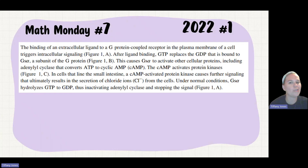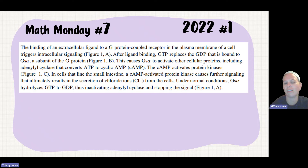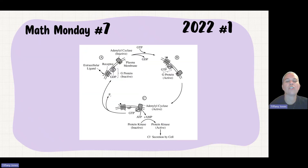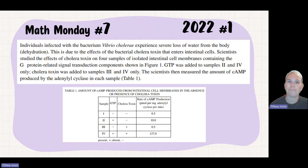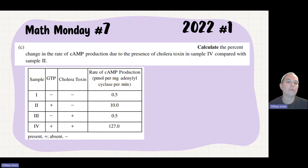So it's question number one — a long reading prompt talking about the binding of an extracellular ligand to the G-protein coupled receptor, and how that signal transduction leads to chloride ions being secreted, which leads to water loss. They give you a diagram, and they want to investigate the effect of the presence and absence of GTP as well as the cholera toxin on the rate of cyclic AMP production. The question asks us to calculate the percent change in the rate of cyclic AMP production due to the presence of cholera toxin in sample four compared with sample two.